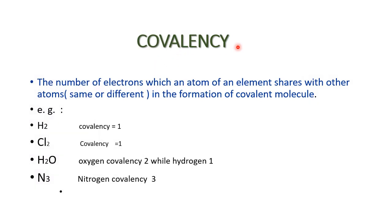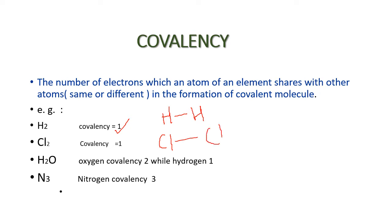Let us move to a new term: covalency. The number of electrons which an atom of an element shares with other atoms of the same or different type in the formation of a covalent molecule is known as its covalency. For example, in case of hydrogen, one hydrogen atom can share only one electron, and hence the covalency of hydrogen is one. Likewise, a chlorine atom can share one of its electrons with another chlorine atom — one electron is shared and hence the covalency of chlorine is one.